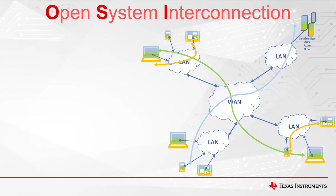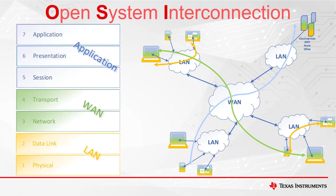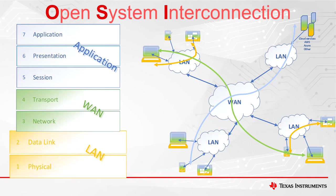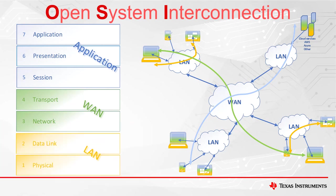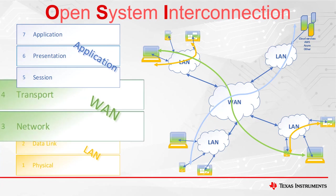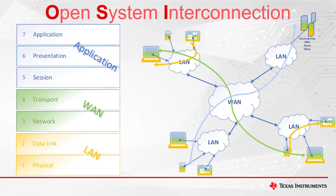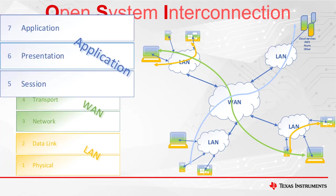The model is divided into seven layers and can be further subdivided into three groups. Layers 1 and 2 represent a local area network. Layers 3 and 4 represent a wide area network. And finally, layers 5 through 7 cover the actual application data and software.